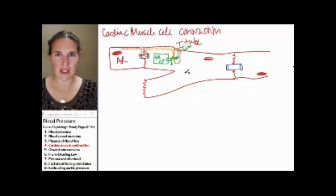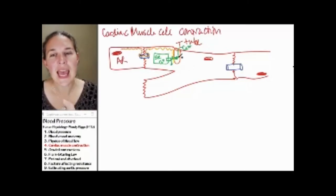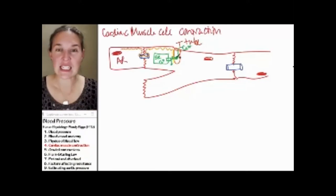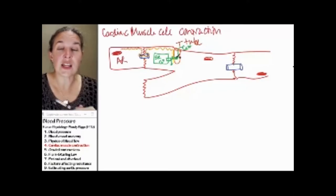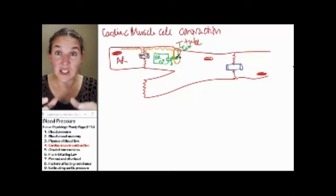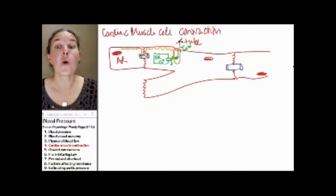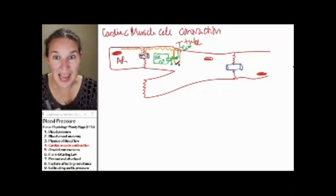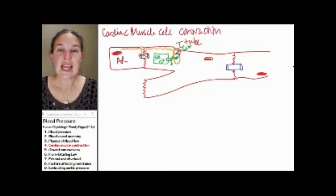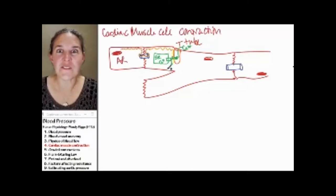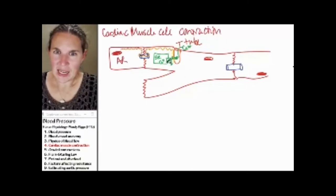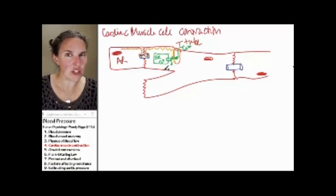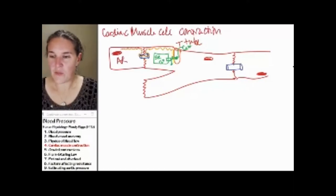I'm going to lay this all out and do a play-by-play in a second. The extracellular calcium — this is different than skeletal muscle contraction. In skeletal muscle contraction, all the calcium comes from inside the sarcoplasmic reticulum. In cardiac muscle contraction, when the action potential travels down the T-tubule, the voltage-gated calcium channels let calcium in from the extracellular fluid. The calcium gates in the sarcoplasmic reticulum are different — they need calcium to bind in order to let the calcium out.